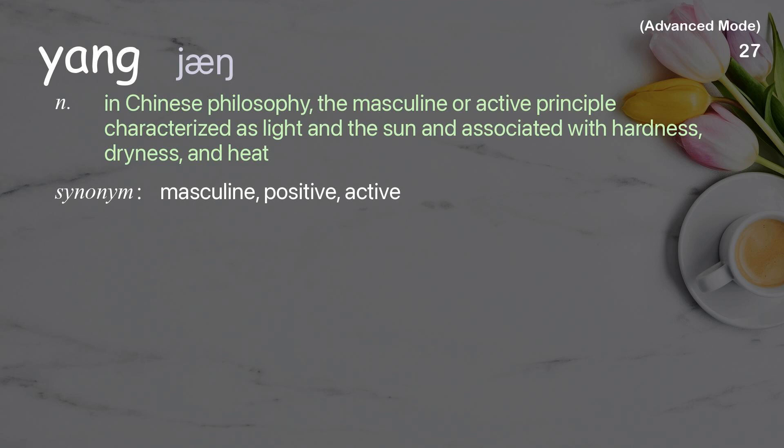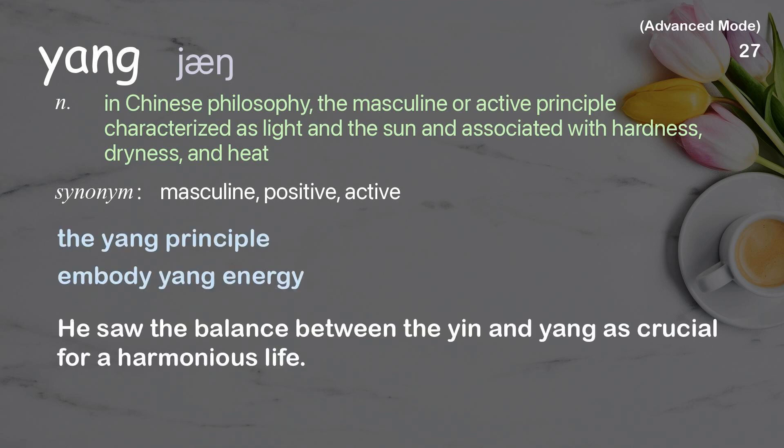Yang: in Chinese philosophy, the masculine or active principle, characterized as light and the sun and associated with hardness, dryness, and heat. Examples: the Yang principle, embody Yang energy. He saw the balance between the yin and yang as crucial for a harmonious life.